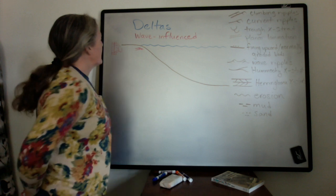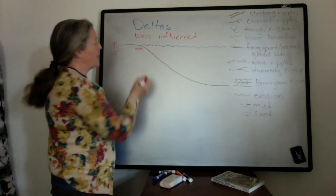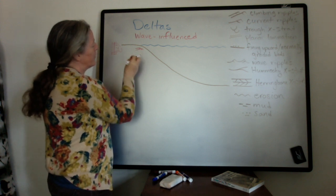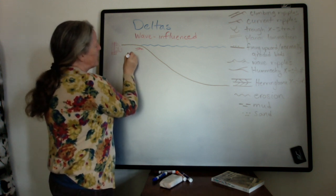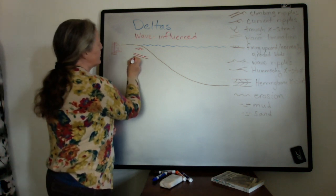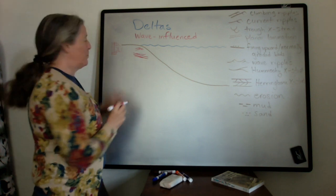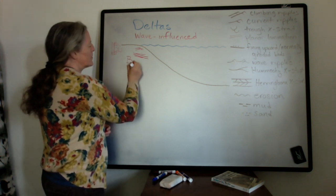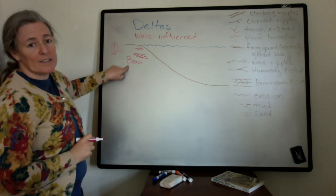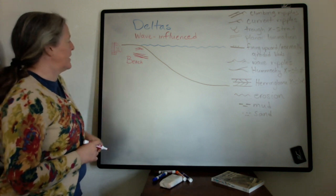One of the things that happens is in the zone near shore, the waves create beaches, and so you get the climbing ripples right at the mouth of the river, but those can be reworked into planar lamination that dip towards the ocean that represent beach deposits. Almost always when you have waves, you see evidence of beaches from that activity and the transport of sand along the shore.